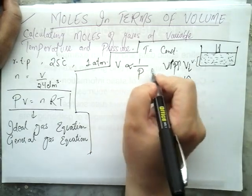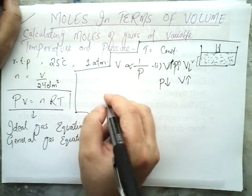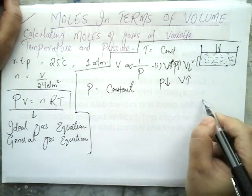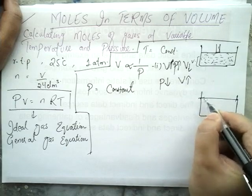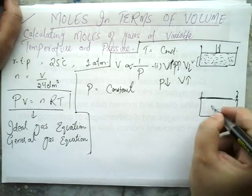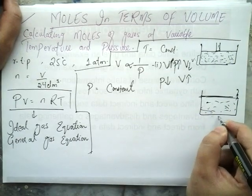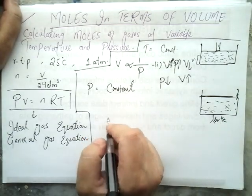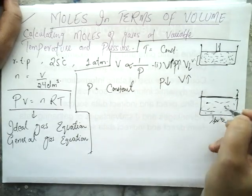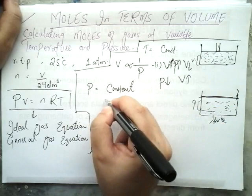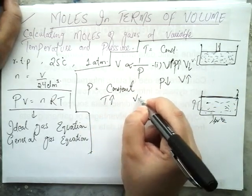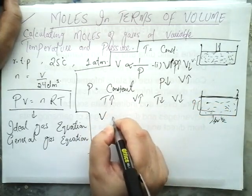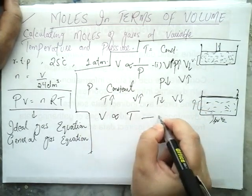If we decrease pressure, volume will increase. This is one relation. In the same way, if we keep pressure constant and increase the temperature, the volume of the gas will rise. If we decrease the temperature, volume will also decrease. So volume has a direct relation with temperature. This is a second relation.